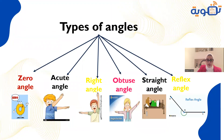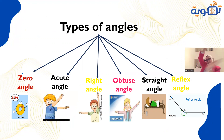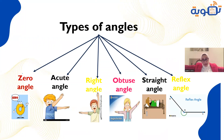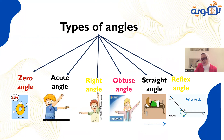Now we'll talk about the types of angles. The zero angle has a measure of zero degrees. The acute angle is greater than zero and less than 90 degrees. The right angle is exactly 90 degrees. The obtuse angle is greater than 90 and less than 180 degrees. The straight angle is exactly 180 degrees. The reflex angle has a measure greater than 180 and less than 360 degrees.